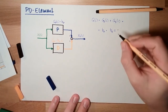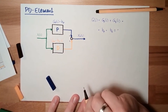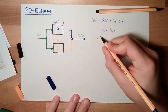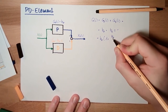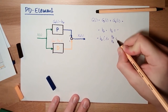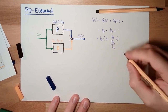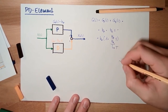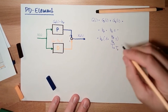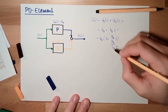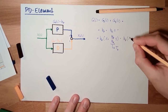Now I will factor out Kp here: Kp times (1 plus Kd divided by Kp, multiplied by s). This ratio Kd/Kp is a constant, and I will call this simply Td. So this is another standard form.